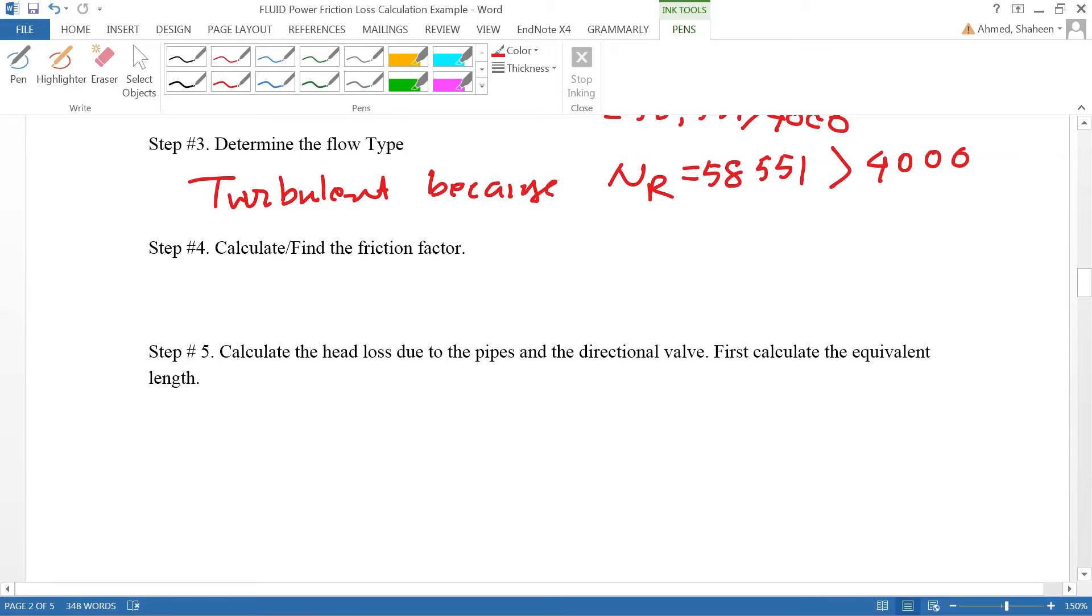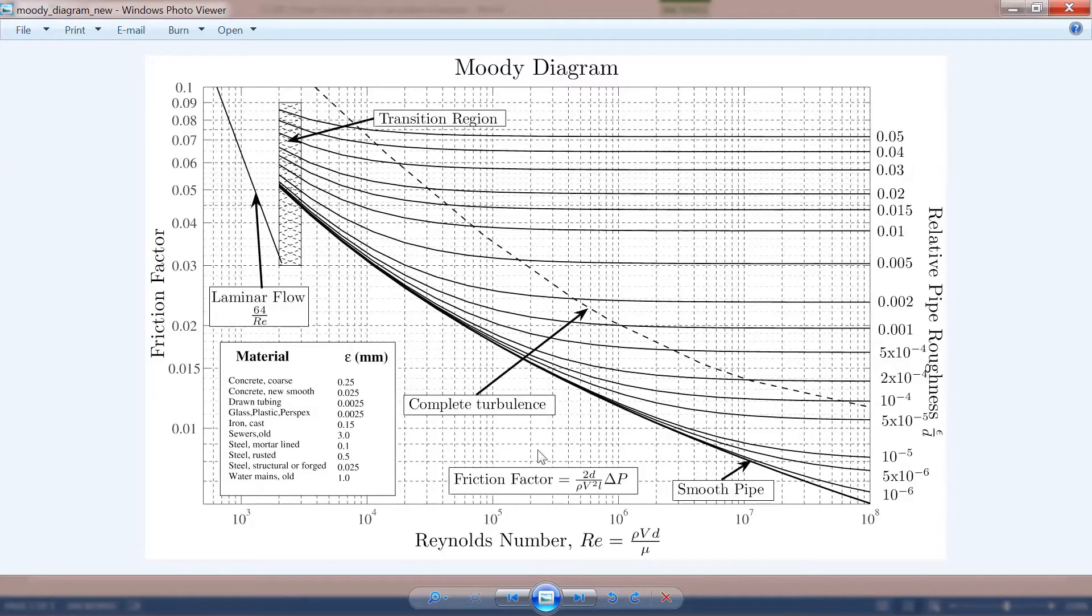To calculate the friction factor, first we need to know the flow type. We know that it's a turbulent flow, so we have to use this Moody diagram to calculate the friction factor.